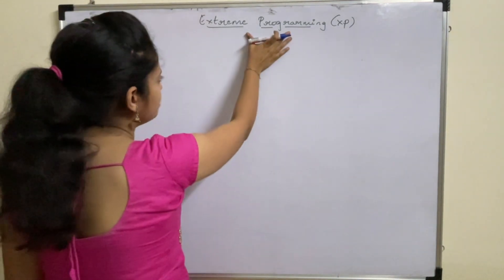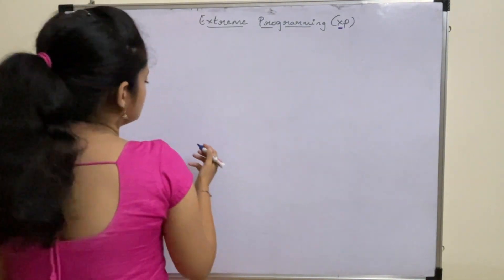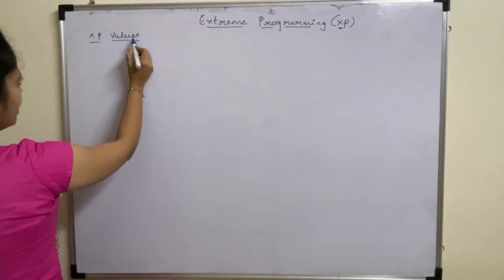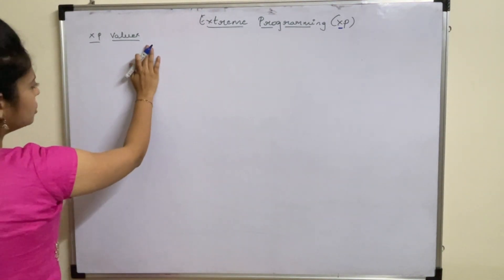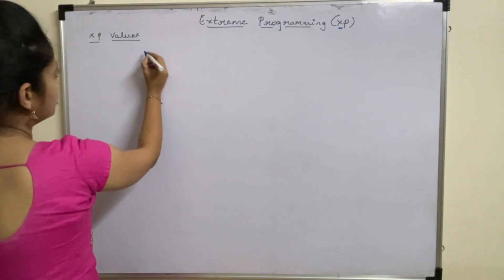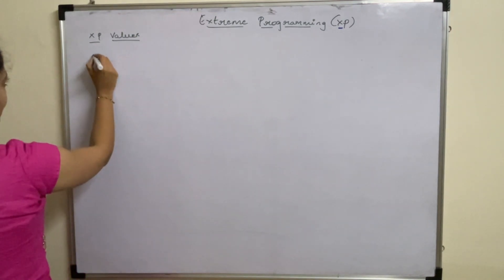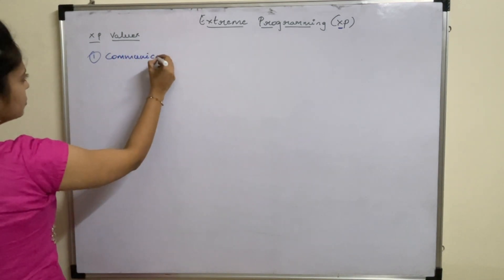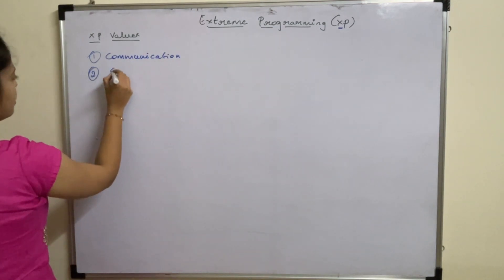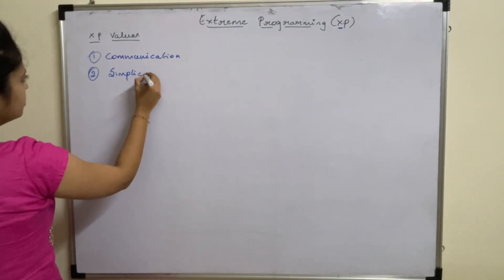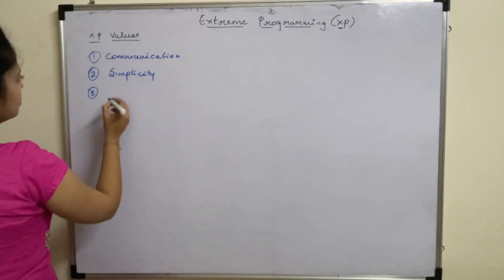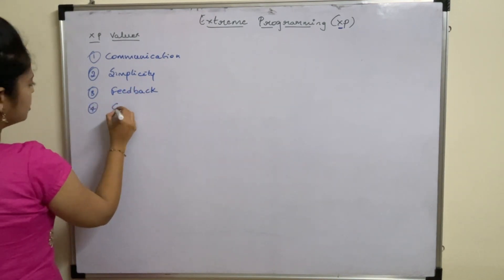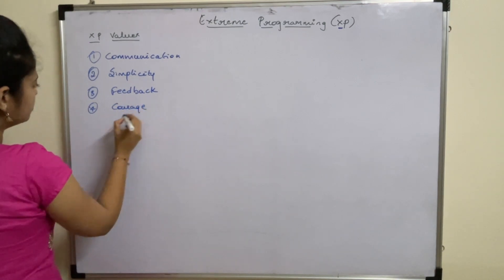In this lecture, let us discuss about Extreme Programming, which is represented as XP. It is a widely used approach in agile software development. There are a set of 5 values that establish the foundation for development as part of XP. These 5 values are: communication, simplicity, feedback, courage, and respect.